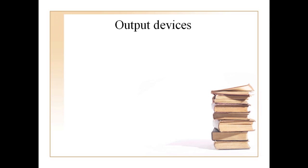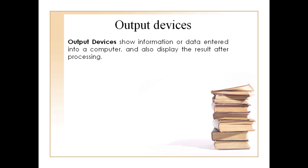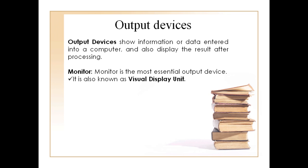Now we come to the third category of computer devices — output devices. What do you mean by output devices? Output devices are the ones that give the result after processing the input. Output devices basically show the information or data. The first type of output device is the monitor.